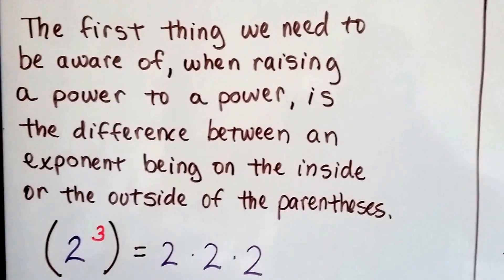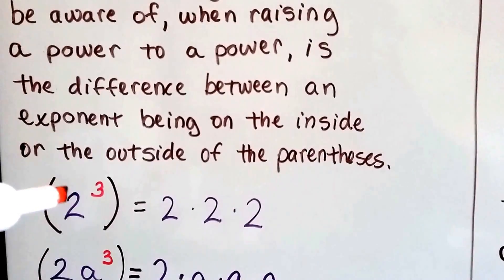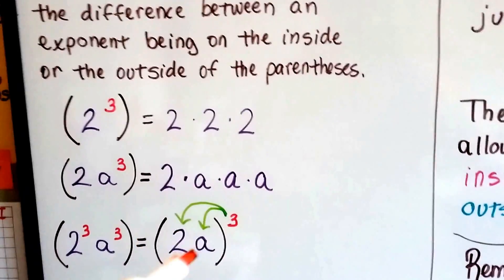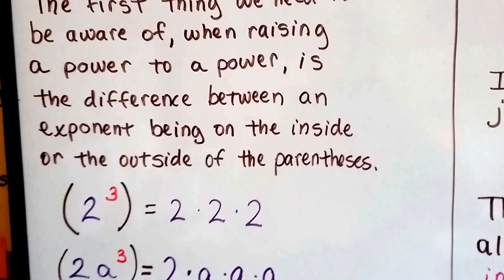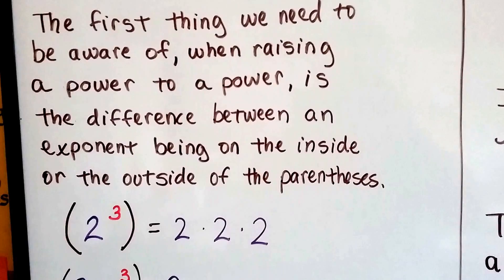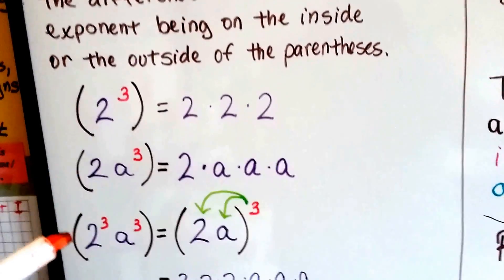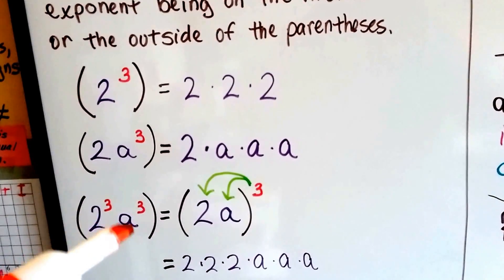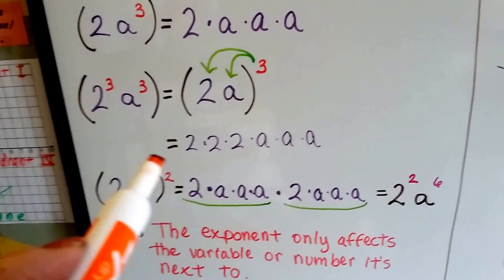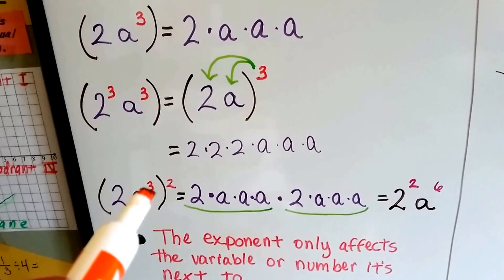The first thing we need to be aware of when raising a power to a power — and remember, when we say a power, we mean an exponent, so 2 is raised to the third power. When we raise a power to a power, there's an exponent on the outside of the parentheses. It's the difference between an exponent on the inside or the outside of the parentheses. This a is just raised to the third power, but this a is raised to the third power which is then raised to the second power. That's the power of a power.